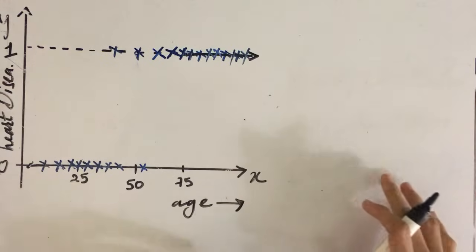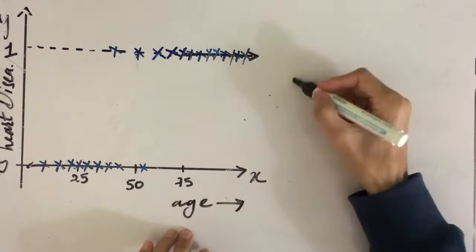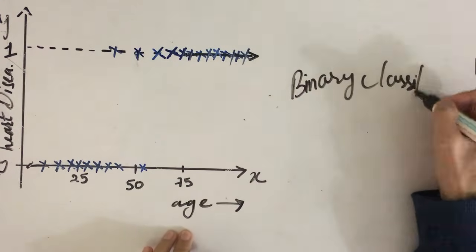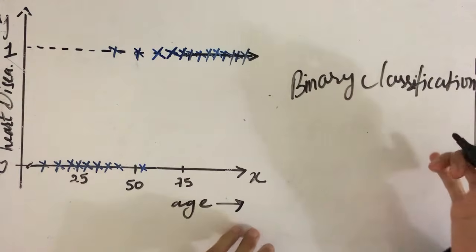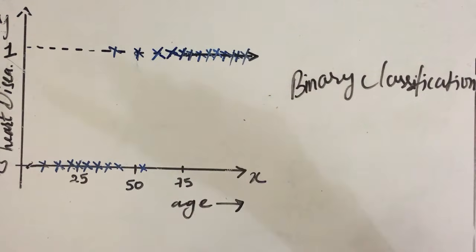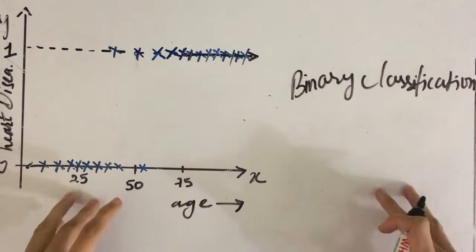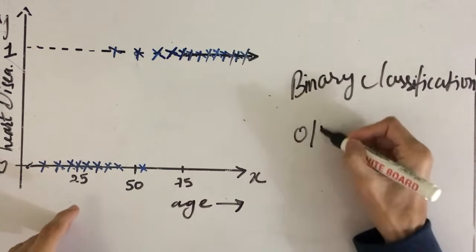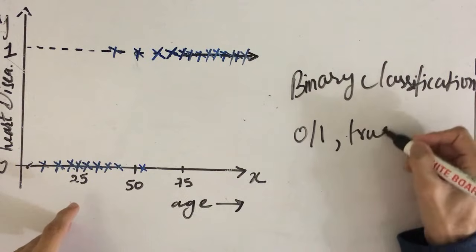Logistic regression is a machine learning model which is used for binary classification. Now, you might ask what is binary classification? Binary classification is where our output predictions can only take one of two possible values. For example, it can be either 0 or 1, or it can be either true or false.